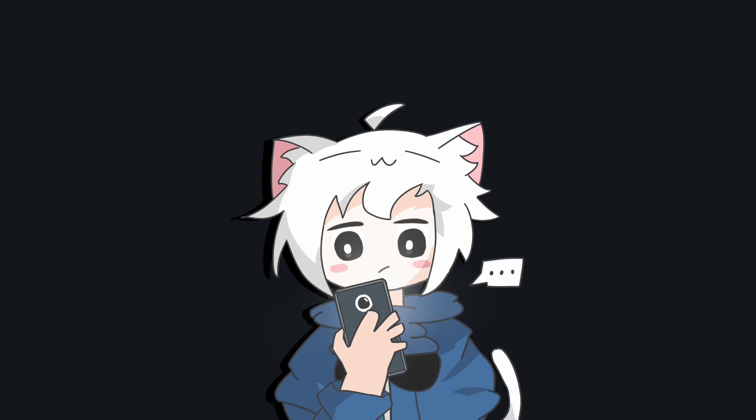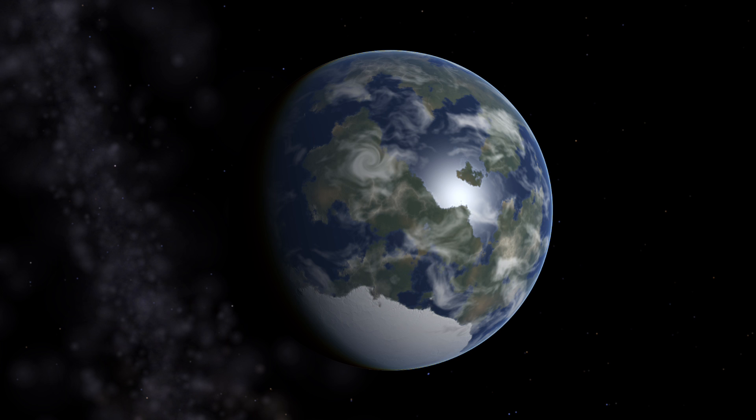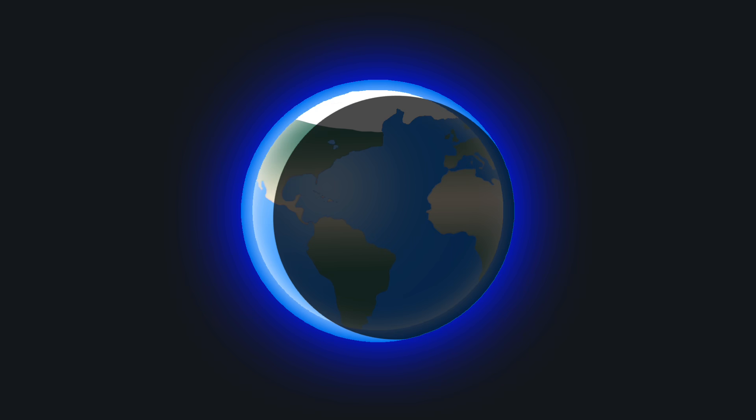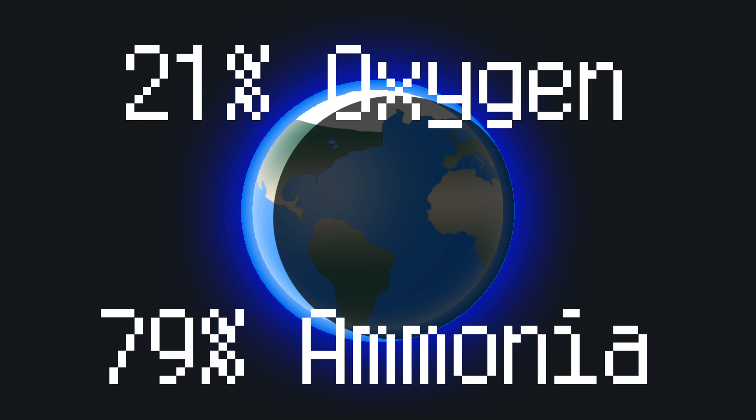So in the end, you shouldn't take those habitable planets too seriously, they are just some mirage. It's easy to get caught up in the excitement of discovering potential new homes for humanity, but we must remember to approach such findings with caution and skepticism. Otherwise, you would run into an Earth 2.0 except there is 21% of oxygen and 79% of ammonia in the air in the end.